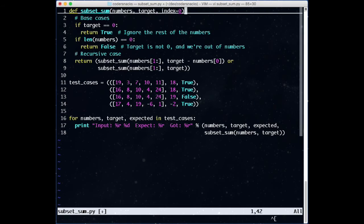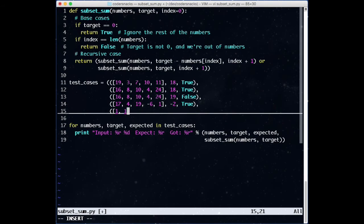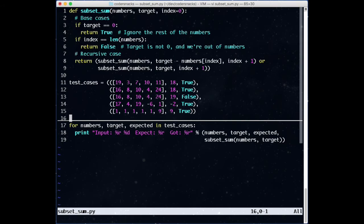As a small improvement, instead of using array slices, we can pass the index as an optional variable. This avoids making a lot of list copies. Our new code is as follows.